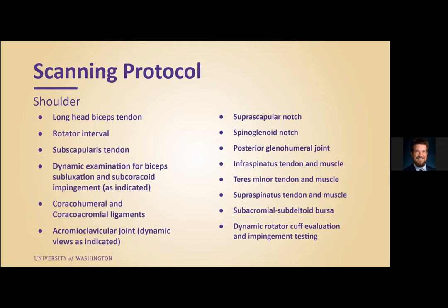We then moved on to diagnostic ultrasound. For our scanning protocol, we did a complete shoulder exam, starting anteriorly with the biceps tendon, then moving to the rotator interval subscapularis tendon, proceeding with some dynamic testing, then moving to the coracohumeral and coracoacromial ligaments, and then evaluating the AC joint with dynamic views as well. Then moving to the suprascapular notch, spinal glenoid notch, posterior glenohumeral joint, infraspinatus, teres minor, supraspinatus, and looking at the subacromial subdeltoid bursa with more dynamic testing.